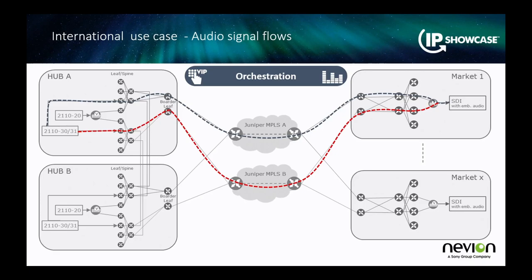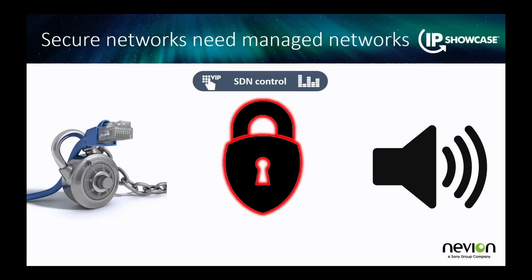This is an example of an international use case for audio flows in an essence-based format. We're actually routing internationally as well as locally all of the requisite audio flows — many 2110-30 flows flowing through the international connectivity in the same manner as the video connectivity. One of the things we've been looking at in the wide-area connectivity group is how we actually understand the relative timing offset between video and audio when we're transiting over WAN.